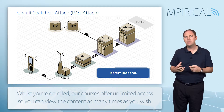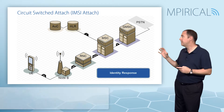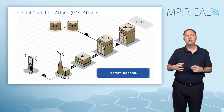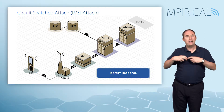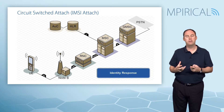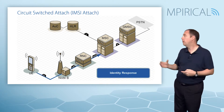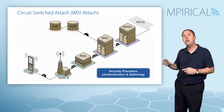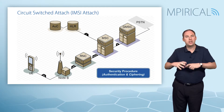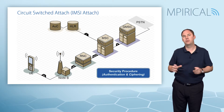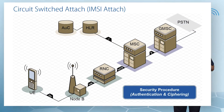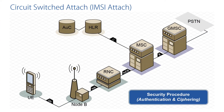Armed with the IMSI, the MSC is able to go and get security information. So typically what happens next is we go off and perform the authentication and security mode command procedures. Assuming all of that is successful, we can then move on with attaching the subscriber to the system.